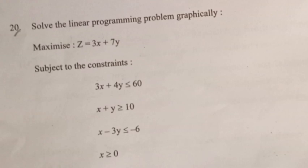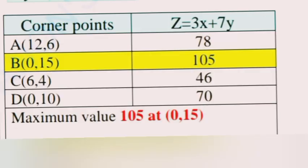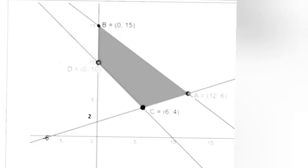Question 20: Solve the linear programming problem graphically. Maximize Z = 3x + 7y subject to: 3x + 4y ≤ 60, x + y ≥ 10, x − 3y ≤ −6, x ≥ 0. Corner points and Z values: A(12, 6) → Z = 78; B(0, 15) → Z = 105; C(6, 4) → Z = 46 (approx); D(0, 10) → Z = 70. Maximum value = 105 at (0, 15).